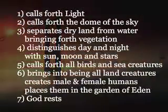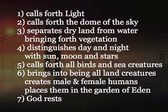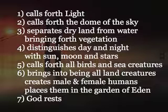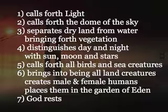I believe it reads like this. First, God created light, then the dome of the sky, then God separated out dry land from water and brought forth vegetation. Next, God made night and day by calling forth the moon with the stars and the sun. Next, God called forth the creatures — all the creatures that swim and fly. Finally, God called forth the land creatures of all kinds, ultimately creating humans on that sixth day, at which point God breathed life into Adam, then made Eve from his rib.